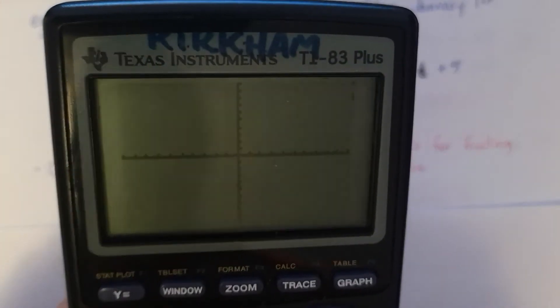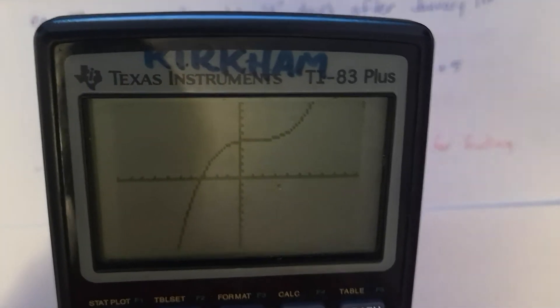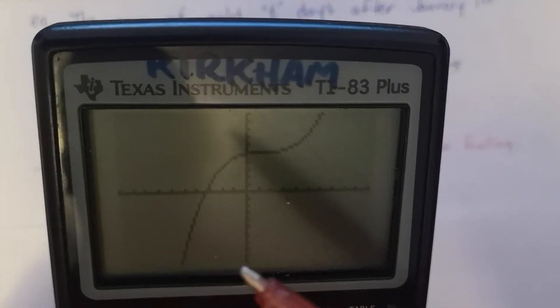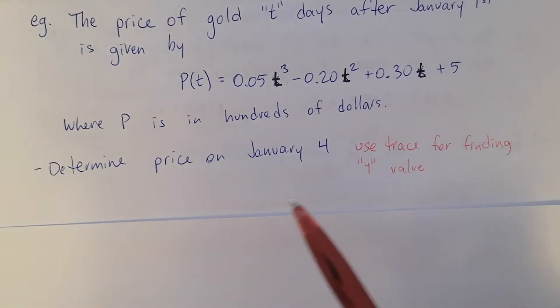All right, my window settings are back to default. Let's see what this graph looks like. All right, so I can kind of see what's going on. I don't care about anything negative time because it's just saying that this is modeled after January 1st.